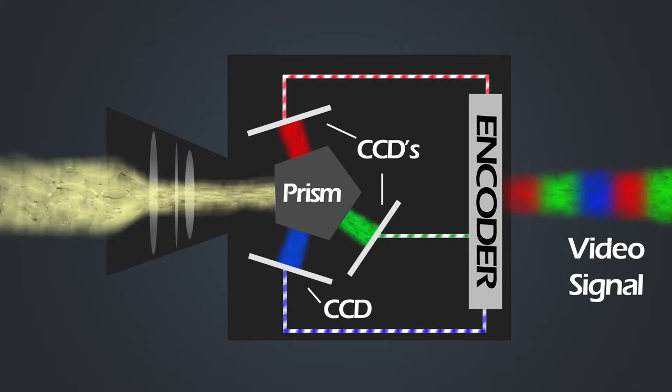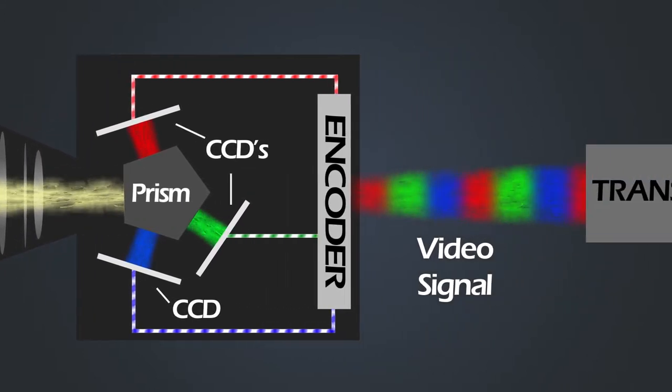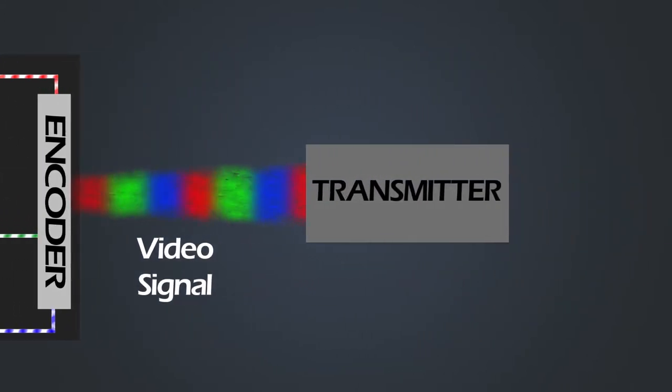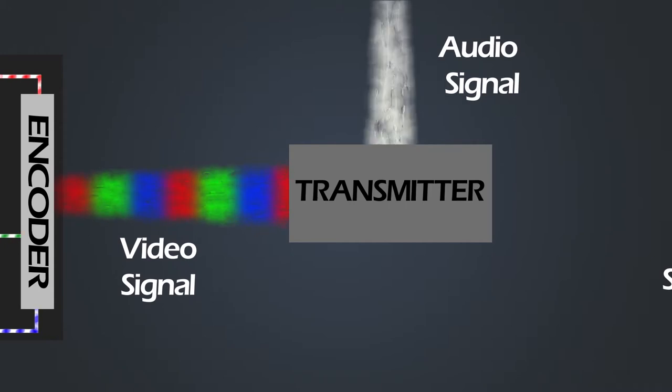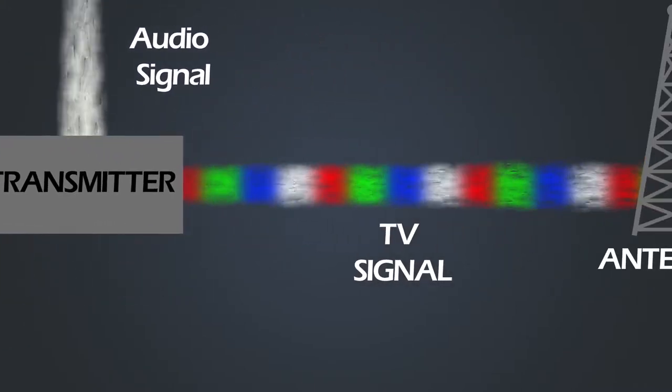Okay, so next this video signal will go along to something called our transmitter. Now we're still missing something and that's the audio. So the audio from your recording device, microphone or whatever, will come in and get combined with the video signal to make a television signal.